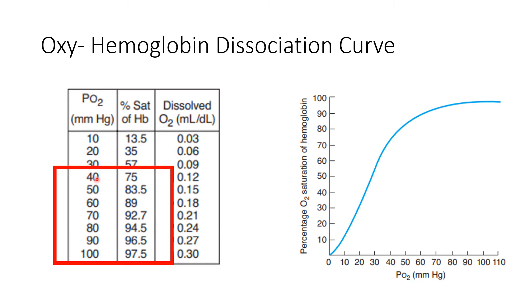At 40 mmHg, hemoglobin is 75% saturated, and at 100 mmHg, it is around 97–100% saturated. So with an increase in PO2, oxygen saturation increases.